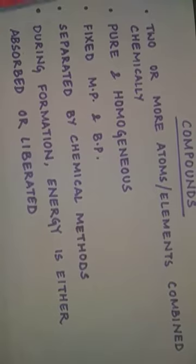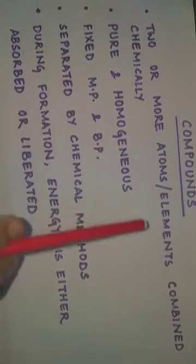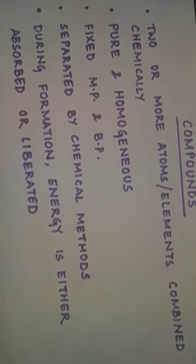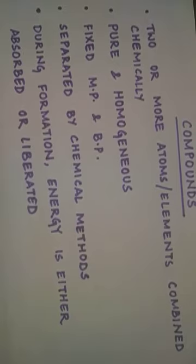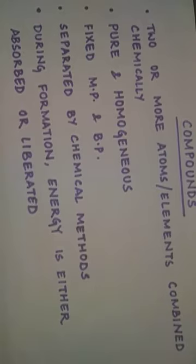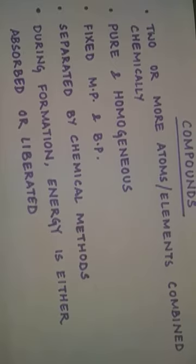The first property: two or more atoms or elements combine chemically to form a compound. These elements can be different elements, or it can also be the same element combining to form a compound. Second, compounds are pure and homogenous — they have a fixed chemical composition, and that composition is uniform throughout; it is not variable from place to place.